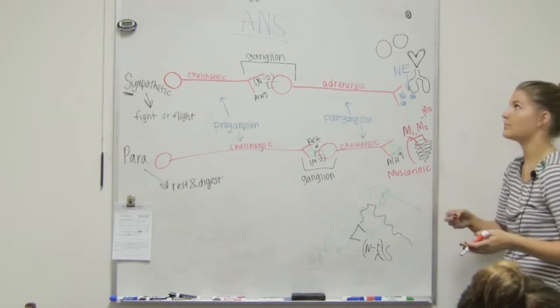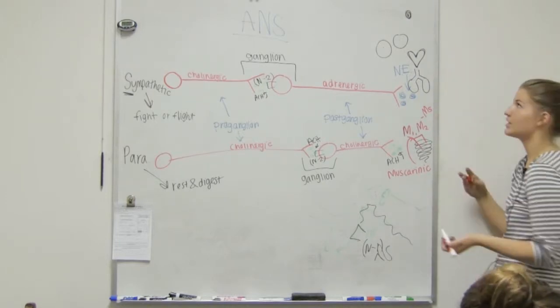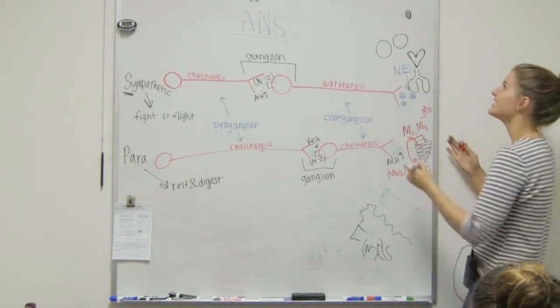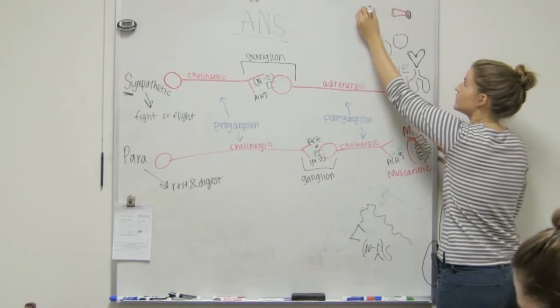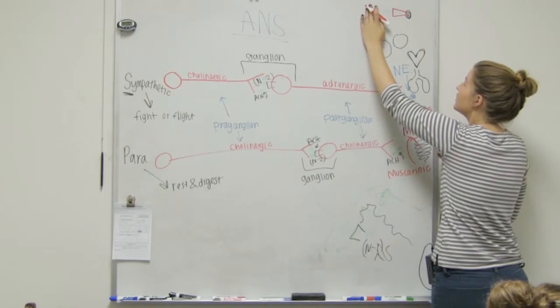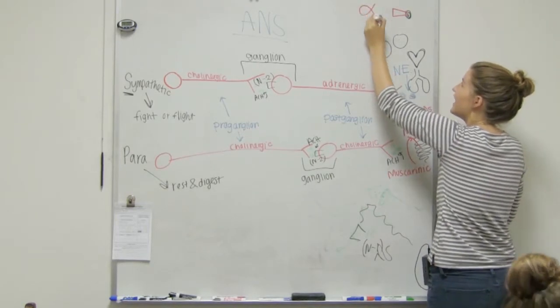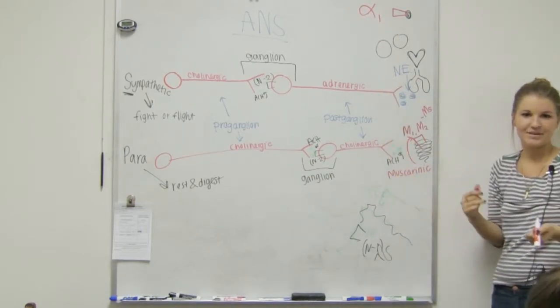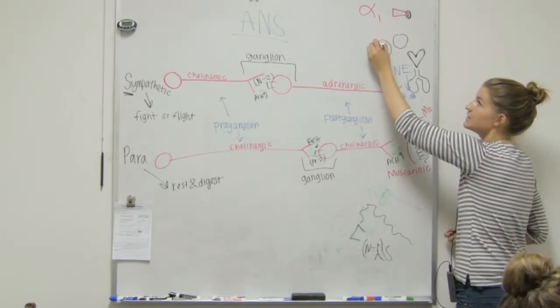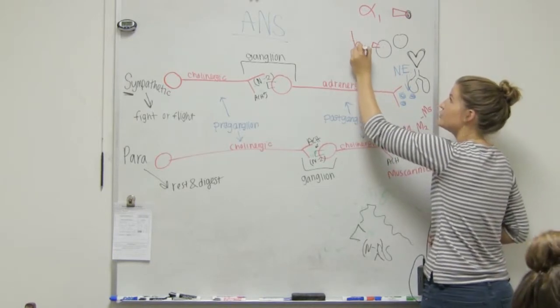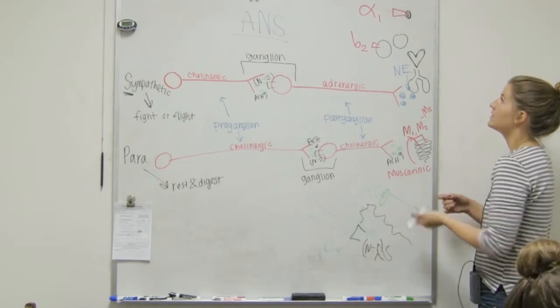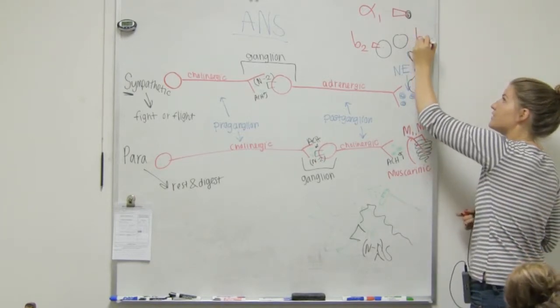And you'll learn next week more about effector organs and exactly what receptors are on them. But just so we can get to your original question. On sweat glands, those are called your alpha 1 receptor. On your eyes, the receptor is called a beta 2 receptor. On your heart, it's a beta 1 receptor.